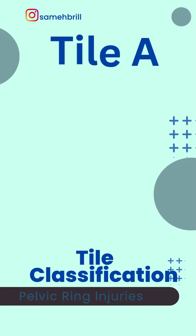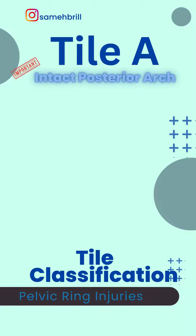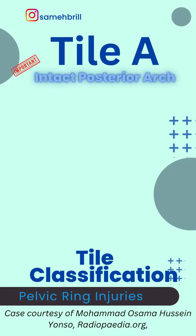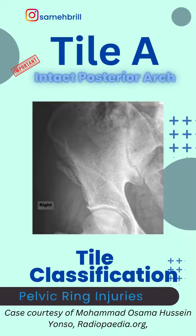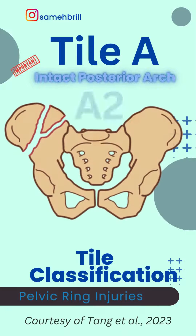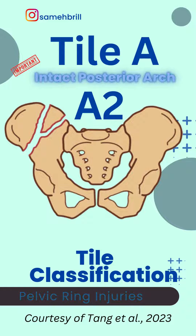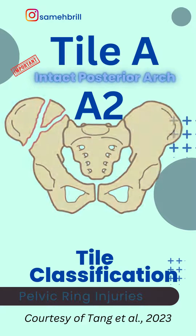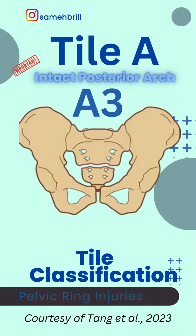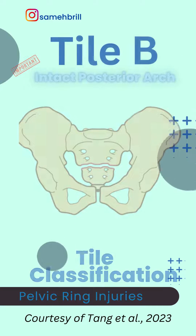Type A fractures do not involve the pelvic ring and the posterior arch is intact. They can be avulsion fractures (A1), iliac crest fractures (A2), and transverse sacral fractures (A3).